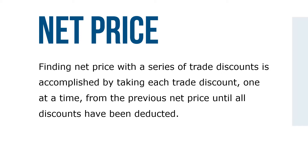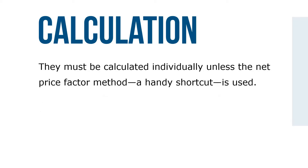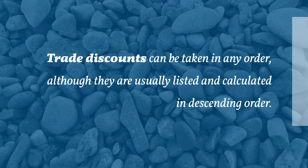Finding the net price with a series of trade discounts is accomplished by taking each trade discount one at a time from the previous net price until all discounts have been deducted. They must be calculated individually, unless the net price factor method — a handy shortcut — is used. Trade discounts can be taken in any order, although they usually are listed and calculated in decreasing order.